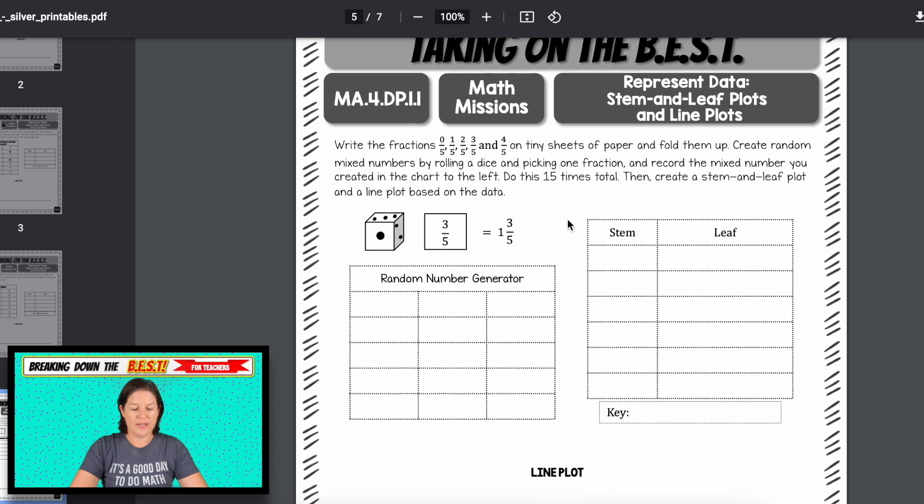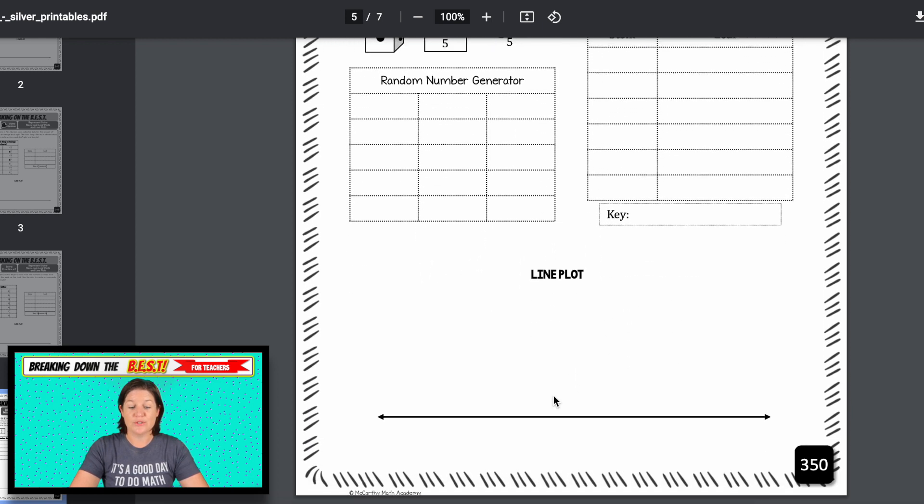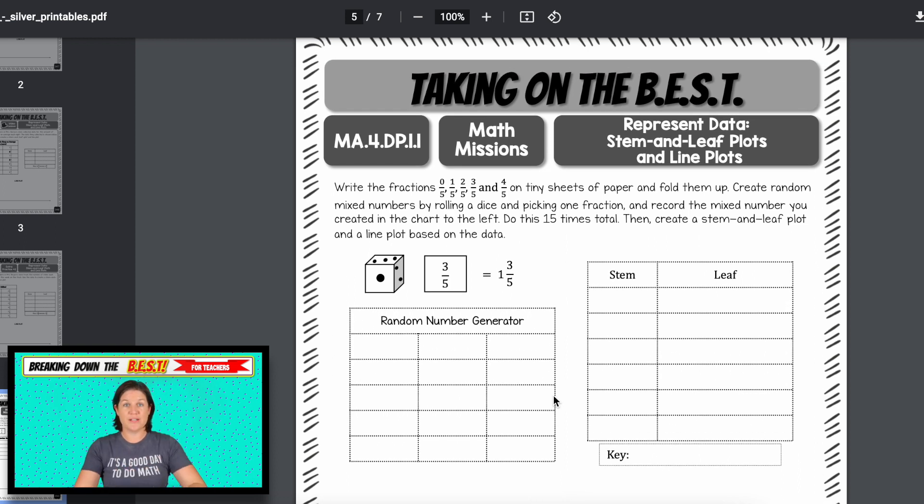And then we have a math mission right here. So this says write the fractions zero-fifths, one-fifth, two-fifths, three-fifths, and four-fifths on tiny pieces of paper and fold them up. Create random mixed numbers by rolling a dice and picking one of the fraction pieces of paper and record that as a mixed number. We're going to do this 15 times, then use that data to create a stem-and-leaf plot with a key and then a line plot. So you can see here collecting and representing data. This is nailing the standard and it's fun because students get to create their own numbers there.